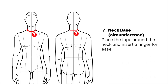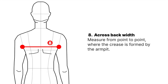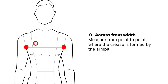Neck base circumference: place the tape around the neck and insert a finger for ease. Across back width: measure from point to point where the crease is formed by the armpit. Across front width: measure from point to point where the crease is formed by the armpit.